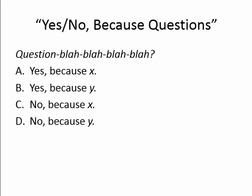These questions are structured like this: we have a question and then two pairings of answer choices. Two choices typically begin with yes and the other two begin with no. Most of the time, the rationales — the 'because' parts — are repeated and mixed and matched with the yes and the no, so that the test ends up creating four different potential answer choices out of two different rationales. The rationale in A and C are the same, and B and D are the same, but what makes them different answer choices are the yes and no parts.